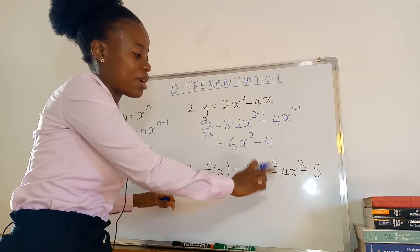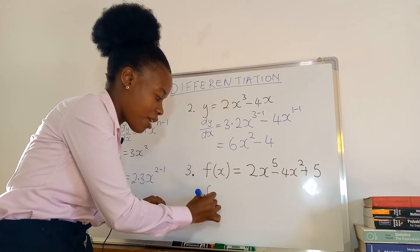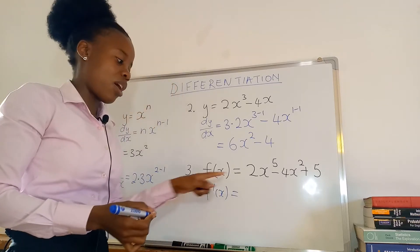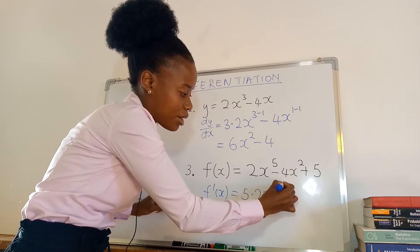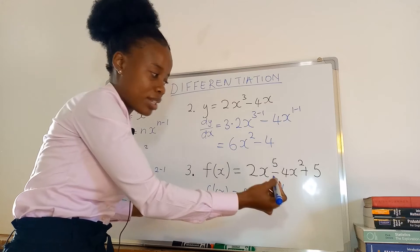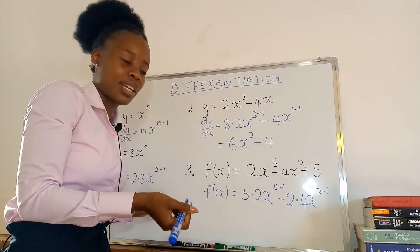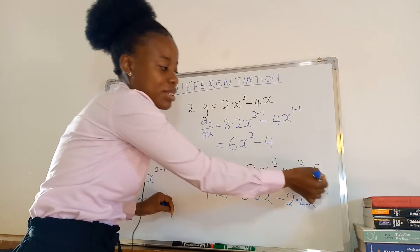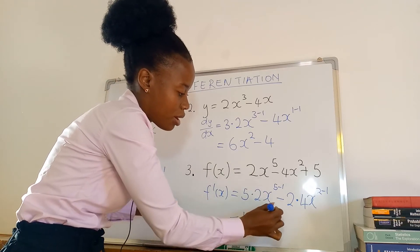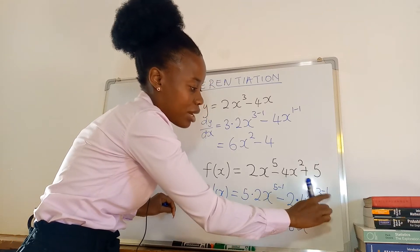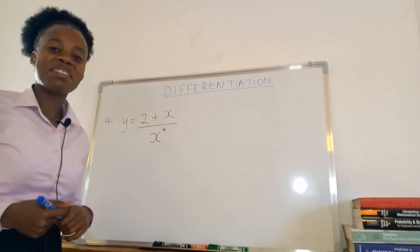Number three: f(x) equals 2x to the power five minus 4x squared plus 5. Because it's f(x), we use f prime x — not dy/dx. Drop the power: 5 times 2x to the power four, minus 2 times 4x to the power one. The constant 5 just vanishes. Simplified: 10x to the power four minus 8x.